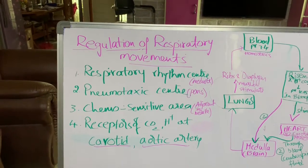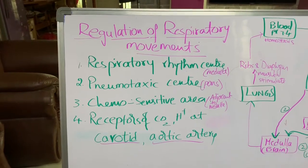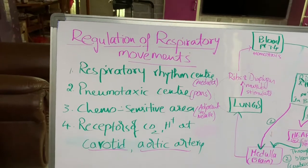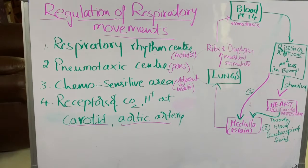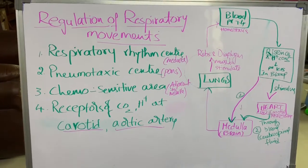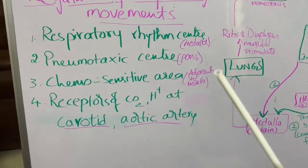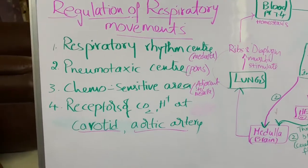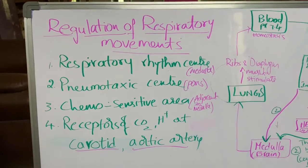Do you know how many times we respire per minute? Yes — 12 to 16 times per minute is the normal condition. To maintain that normal condition, the respiratory rhythm center is very important. It is situated in the medulla oblongata of the brain, and this region contains the center known as the respiratory rhythm center, which controls the rhythm of respiration.